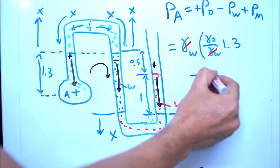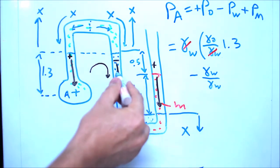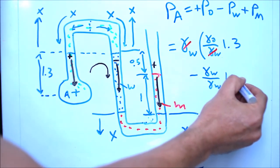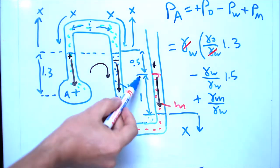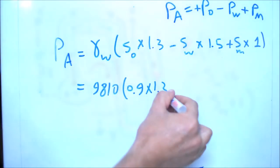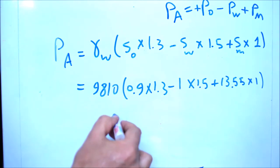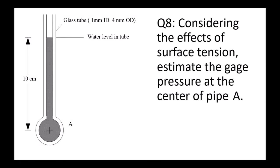The pressure equals gamma multiplied by height. The oil height is 1.3 meter (positive), water height is 1 plus 0.5 = 1.5 meter (negative), and mercury height is 1 meter (positive). We substitute gamma water = 9810, S oil = 0.9, S water = 1, and S mercury = 13.55. The pressure at point A is 129 kilopascal.